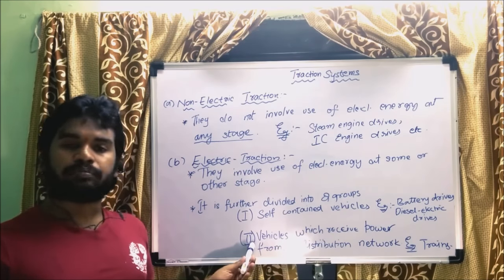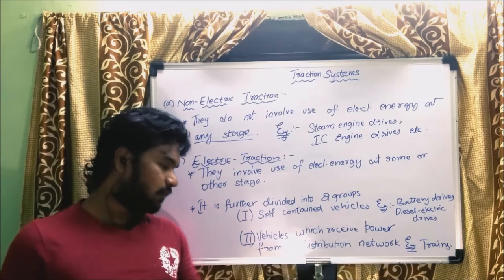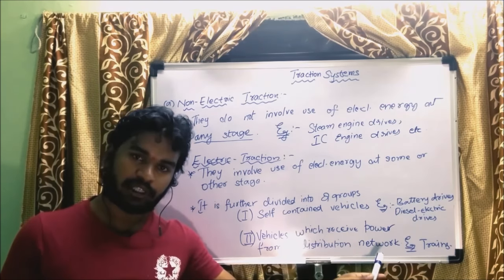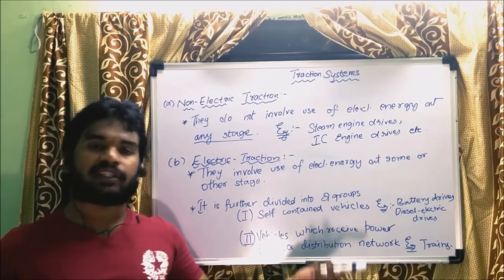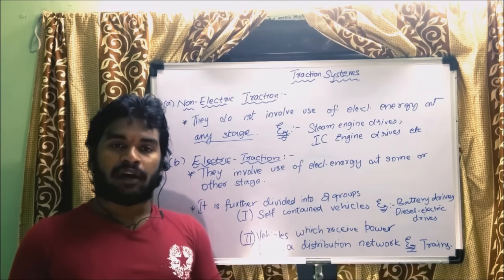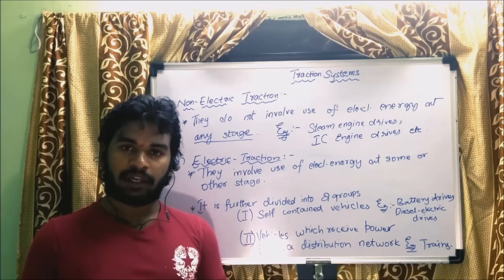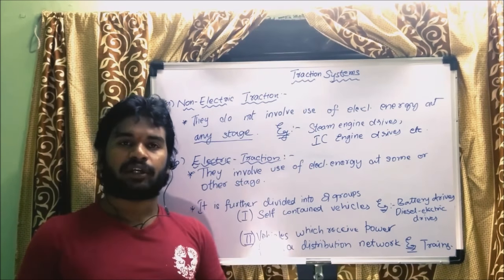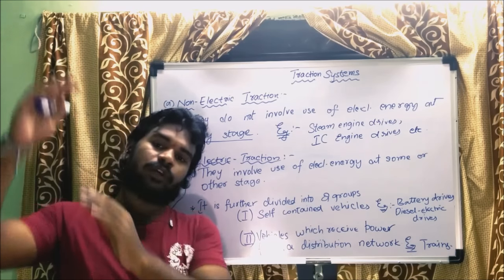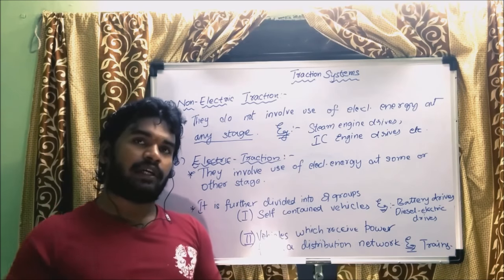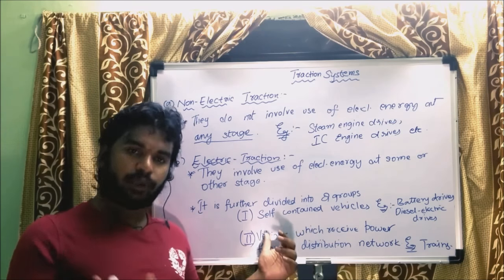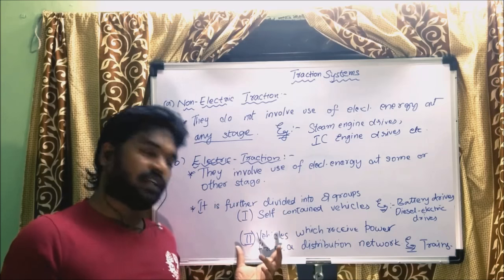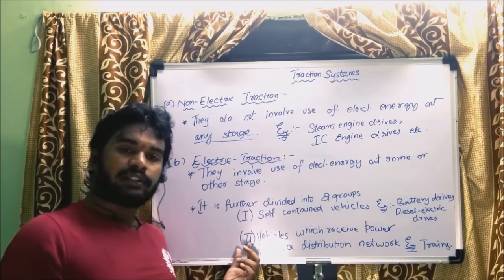The second group consists of vehicles which receive power from an external distribution network. A very good example is the present-day electric trains. You find overhead lines, and the train has equipment on its roof making contact with those wires — that wire is the distribution network and the train receives power from it. Our trains fall under this second group.